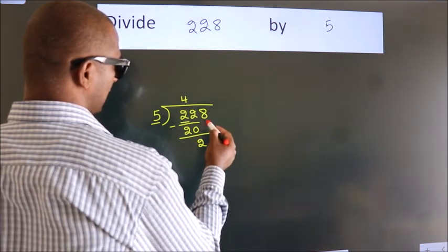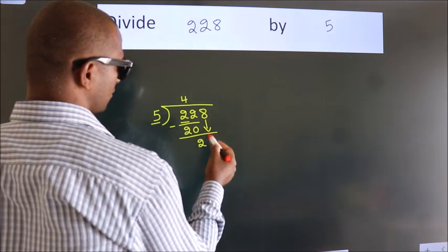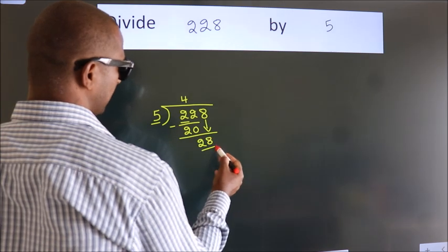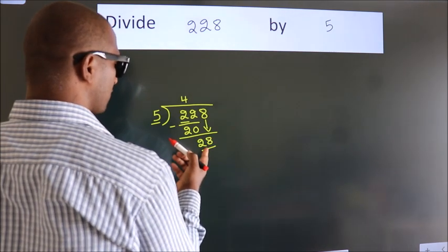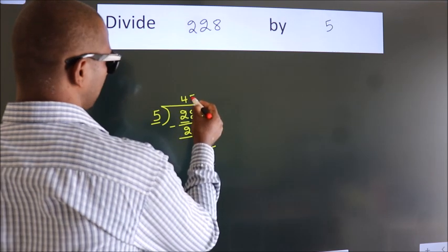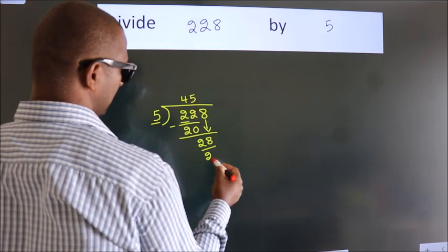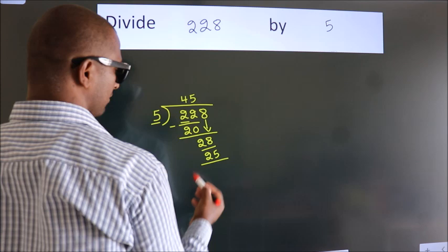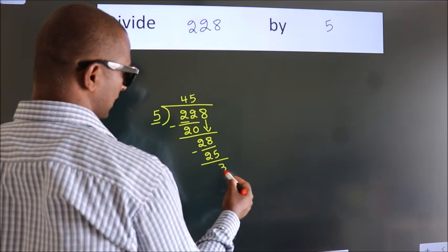After this, bring down the beside number. So 8 down, giving us 28. A number close to 28 in the 5 table is 5 times 5 equals 25. Now we subtract. We get 3.